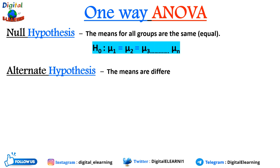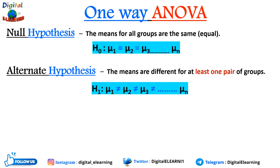For the alternate hypothesis, the means are different for at least one pair of groups. We write it as H1: μ1 ≠ μ2 ≠ μ3 ... ≠ μn, where μ denotes the group mean and n denotes the number of groups. Now for calculating ANOVA you need to know two parameters.